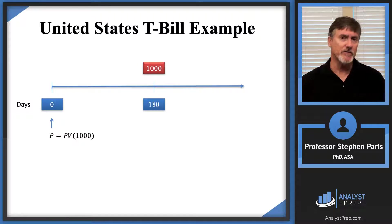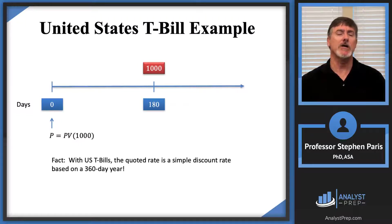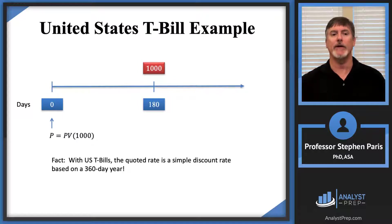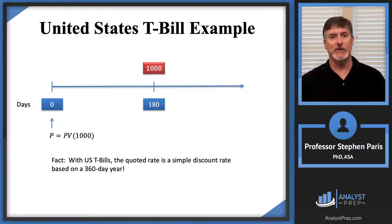Here's the key fact with US T-Bills: when you have a US T-Bill, the quoted rate is a simple discount rate based on a 360-day year. Being a simple discount rate is why this belongs in Module 1, Section 5.